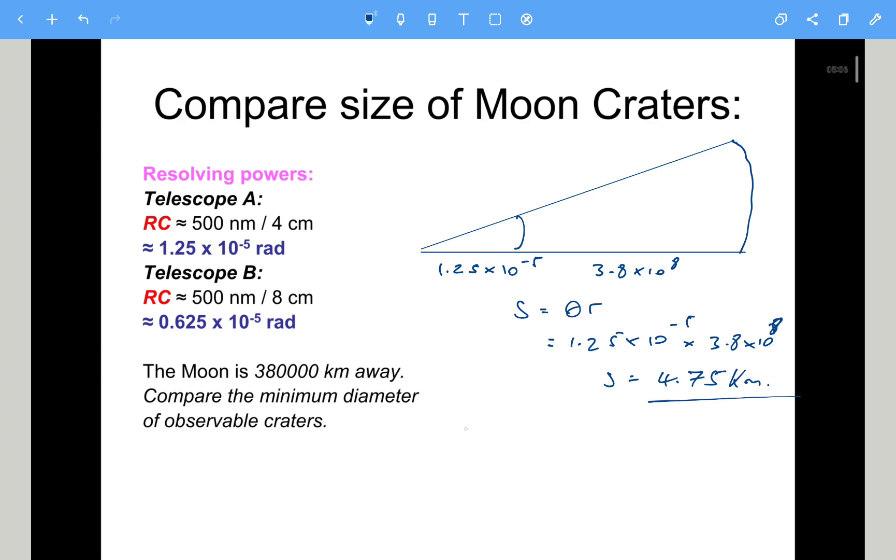And the other one, same method. S equals theta R. This time we've halved the angle, which would indeed halve the diameter of the crater. So we'll just put the numbers in. So 0.625 times 10 to the minus 5, multiplied by the distance to the moon, 3.8 times 10 to the 8. That gives us arc length of 2.375 kilometers.